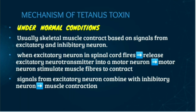Let's see the mechanism of action of tetanus toxin. Tetanus is a very painful disease in which the muscles contract involuntarily. Normally, skeletal muscles contract based on signals from inhibitory and excitatory neurons. When an excitatory neuron in the spinal cord fires, it releases excitatory neurotransmitter onto a motor neuron. The motor neuron fires, sending the signal down the axon and stimulating muscle fibers to contract. Signals from excitatory neurons often combine with signals from inhibitory neurons; the two competing signals cancel each other out, reducing the force of muscle contraction.